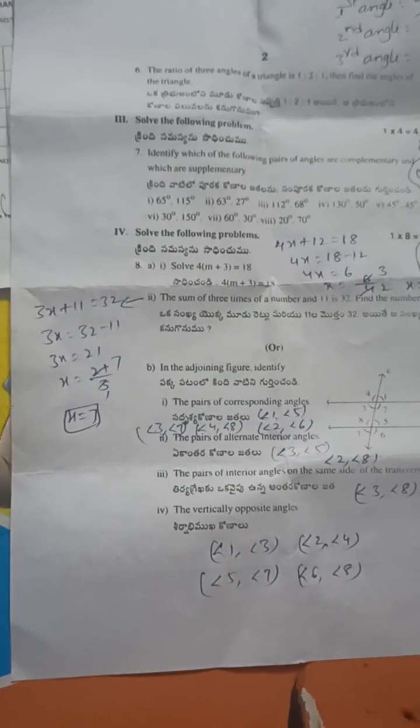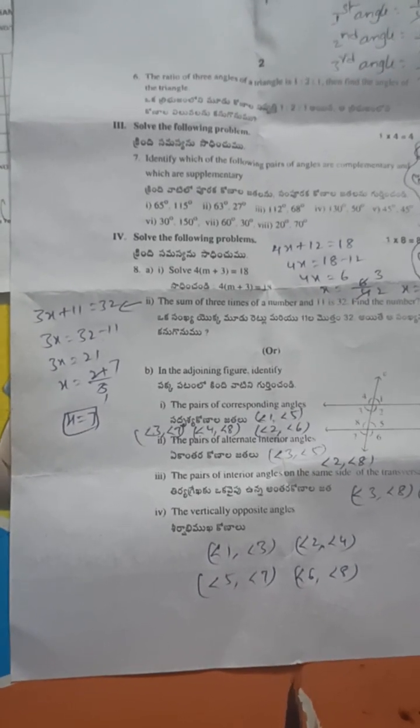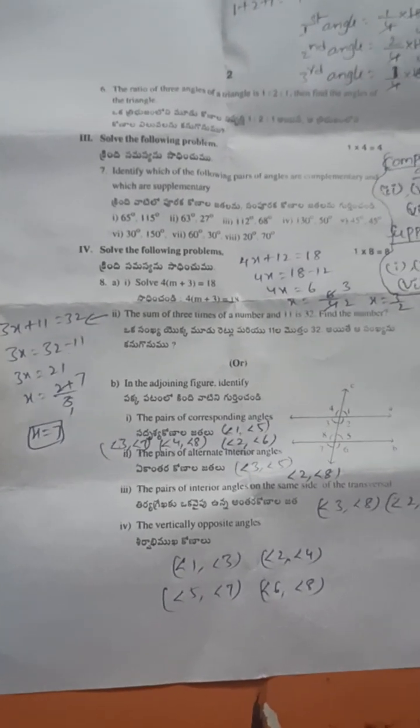Next, the sum of three times a number and 11 is 32. Find the number. We don't know the number, let us take that as x. 3x + 11 = 32. 3x = 32 - 11. 3x = 21. x = 7.